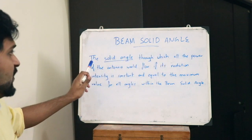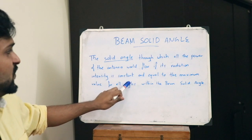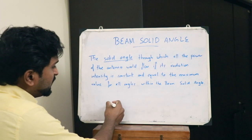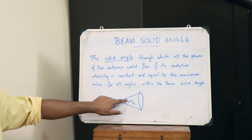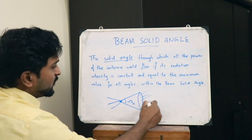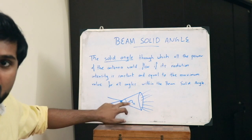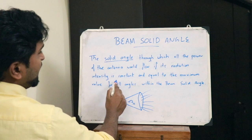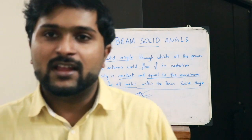In simple terms, beam solid angle is defined as the solid angle through which all the power of the antenna would flow if its radiation intensity is constant and equal to the maximum value for all angles within the beam solid angle. To illustrate: this antenna radiates along this solid angle, and all infinitesimally small angles within it have radiation intensity constant and equal to the maximum value. That is what you call a beam solid angle.